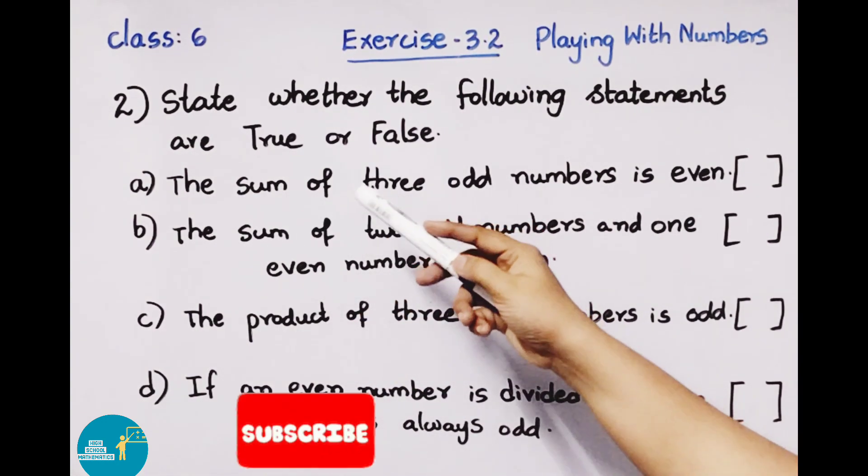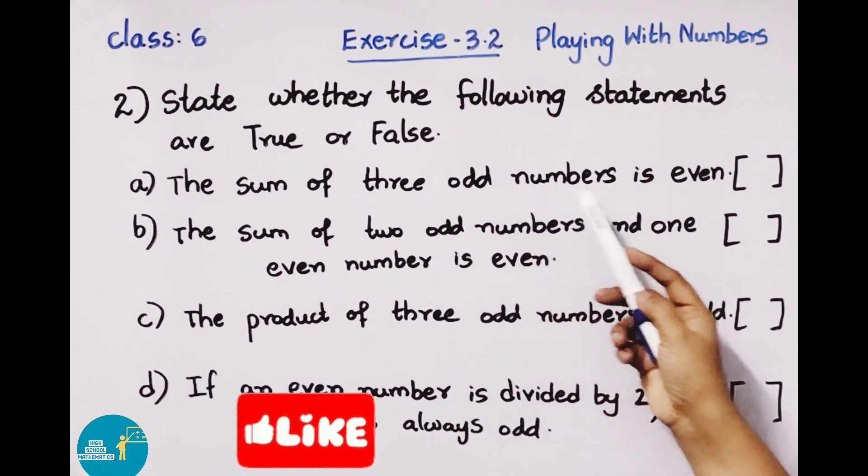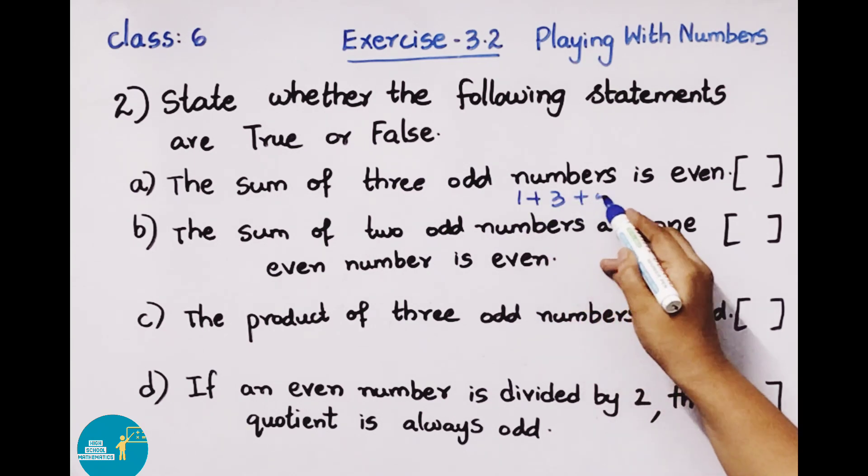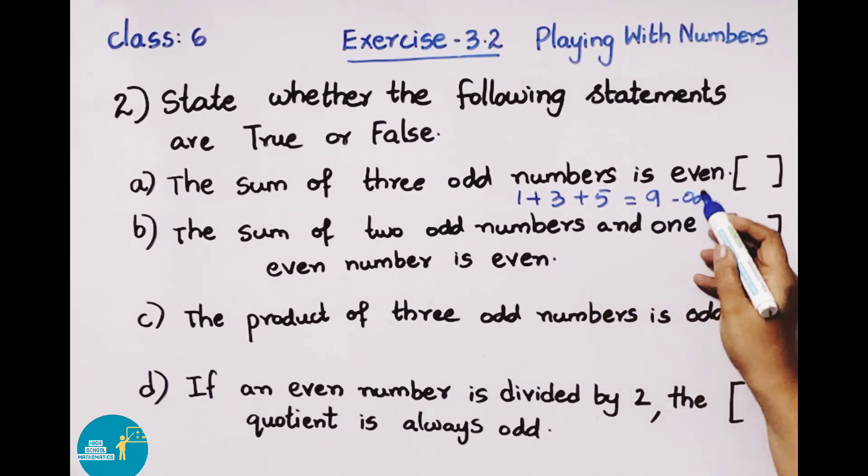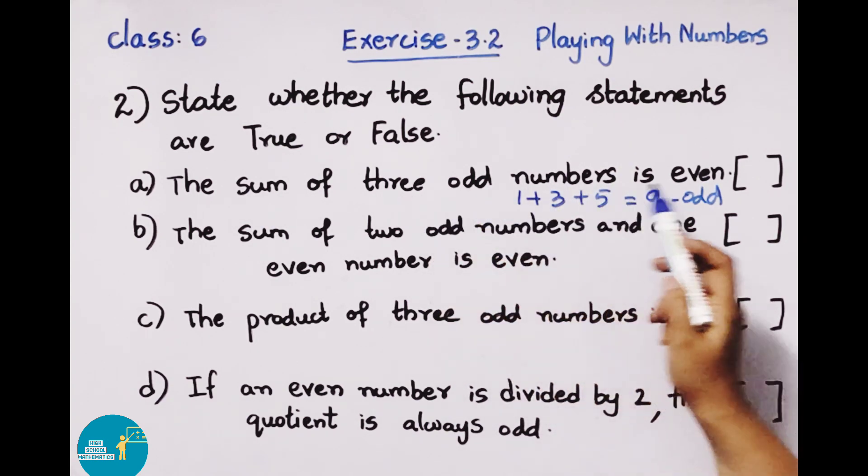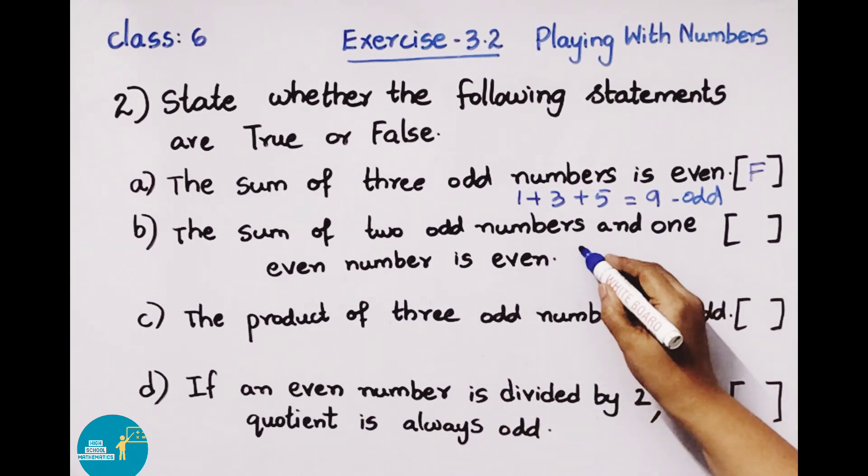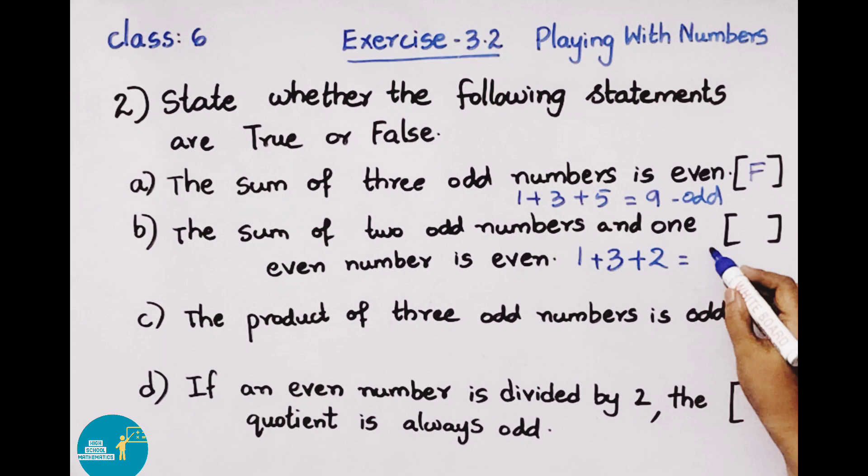Question number two: State whether the following statements are true or false. Statement a: The sum of three odd numbers is even. Example: three odd numbers 1, 3, 5. When we add these three numbers: 1 plus 3 is 4, 4 plus 5 is 9. 9 is an odd number. So this statement is false.